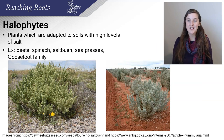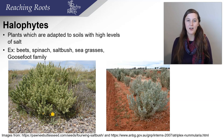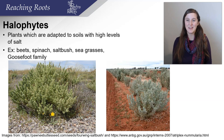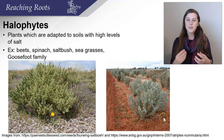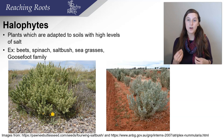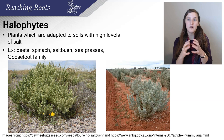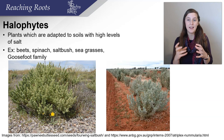Halophytes, on the other hand, are very salt-tolerant. Plants which are adapted to soils with high levels of salt are called halophytes. Some examples are beets, spinach, saltbrush, seagrass, and the goosefoot family. These are the types of plants you'll see growing near the ocean or in areas with high salt in the soil. When there's a lot of salt in the soil, it's very hard for the plant because it emulates drought-stress conditions — that salt holds on to the water in the soil, making it very hard for the plant to uptake that water.